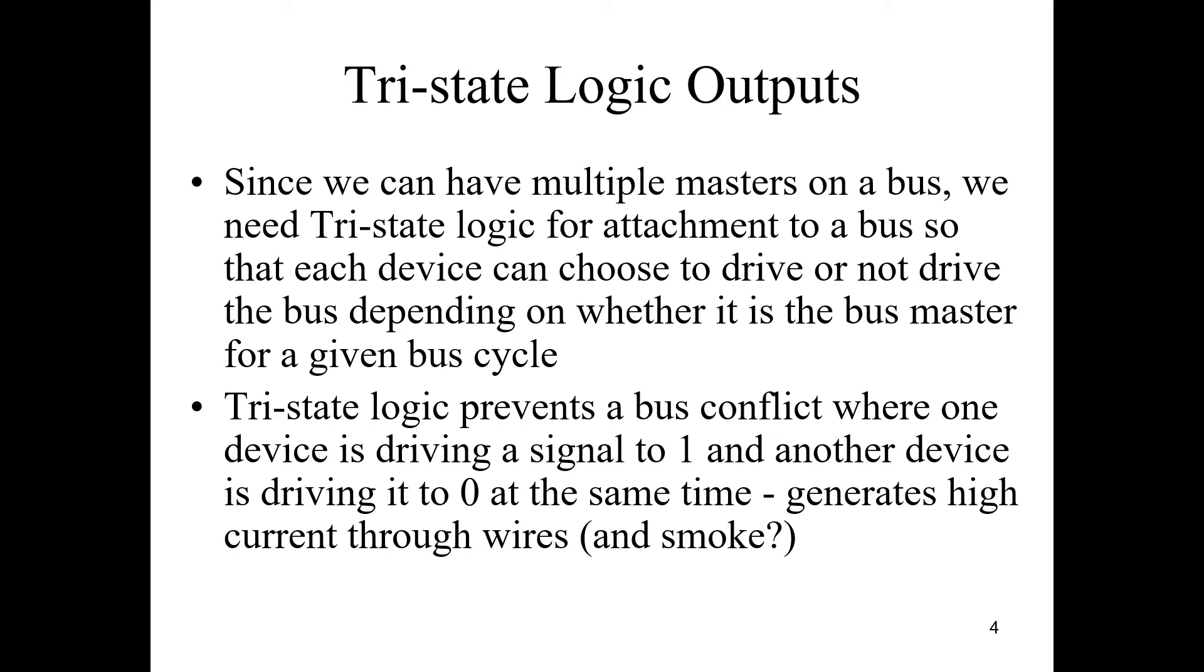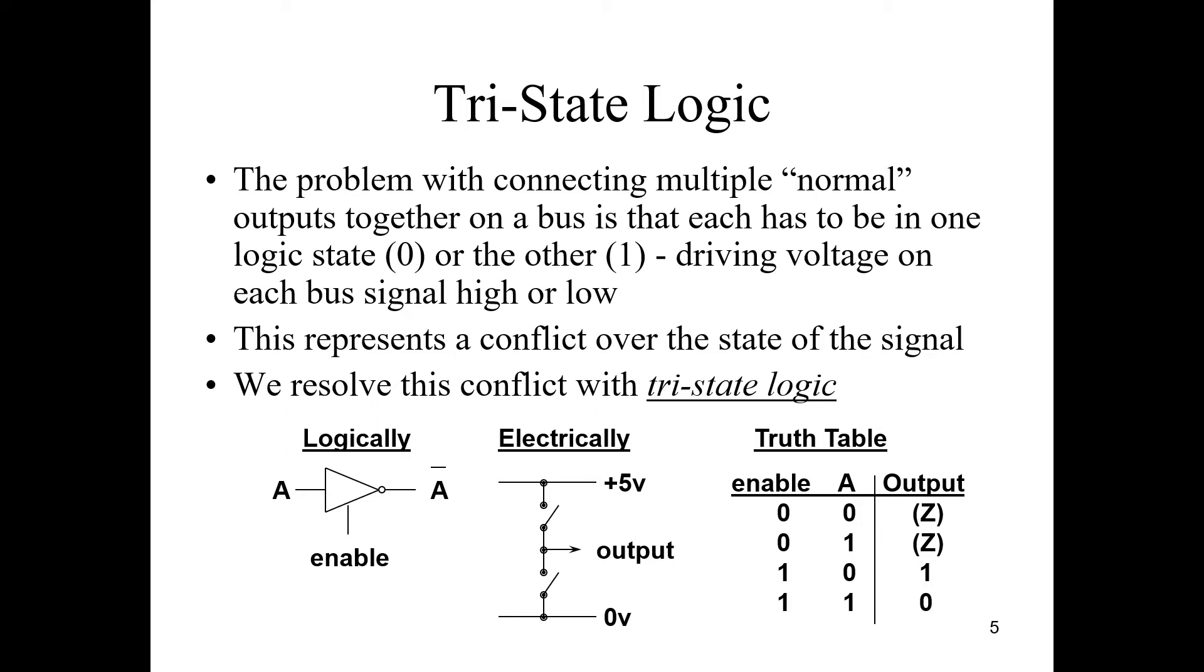The problem with connecting multiple normal outputs together on a bus is that each has to be in one logic state, zero or the other one, driving voltage on each bus signal high or low. There should not be two outputs at one or zero at the same time. This represents a conflict over the state of the signal.